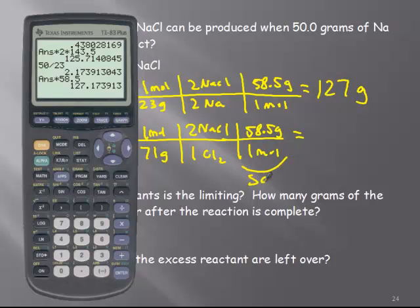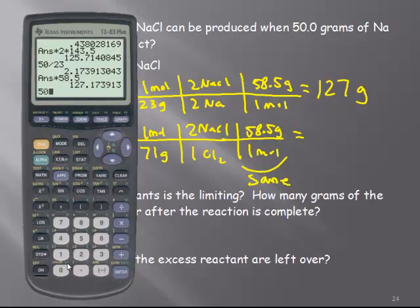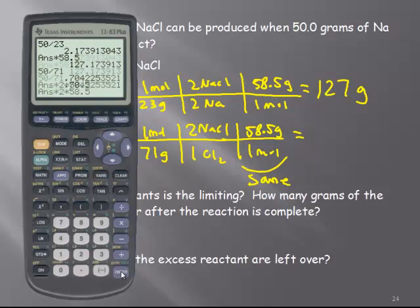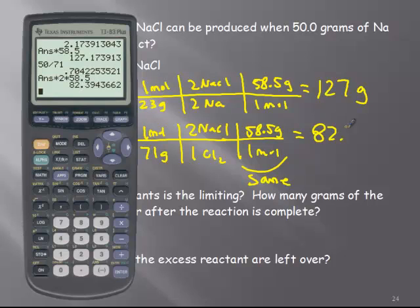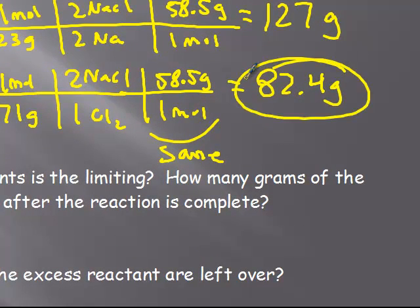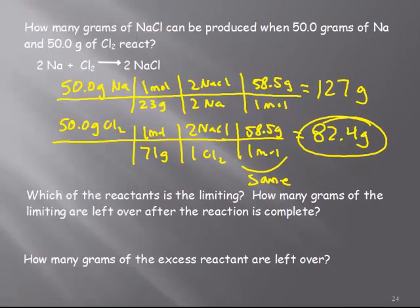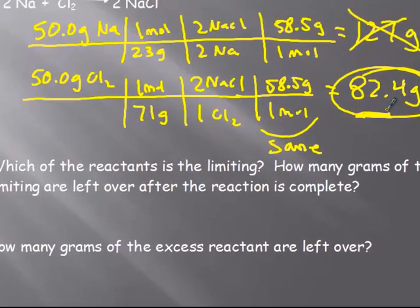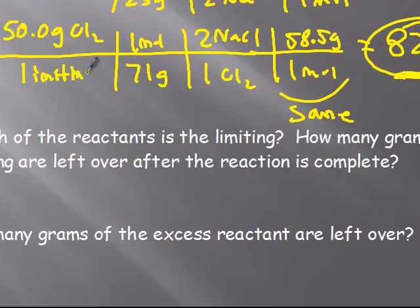Remember, this last step should be the same so that you can compare. 50 divided by 71 times 2 times 58.5, and I get 82.4 grams. You've got to understand that the smaller of these two answers is the right answer — I cannot possibly make 127 grams, because once I make 82.4 grams, all of the chlorine is gone. So Cl2 is called the limiting reactant, because it produces less product.